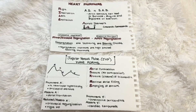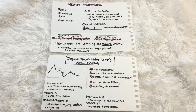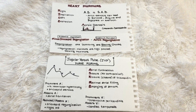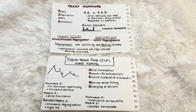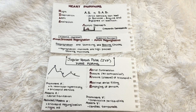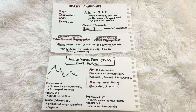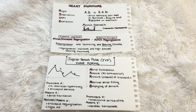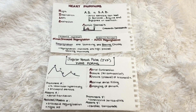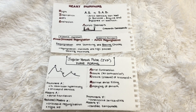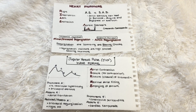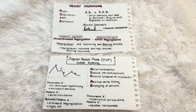Hi everyone, this is CurlyHeadMed. I'm back with another video. In today's video I will be sharing with you a mnemonic I found helpful when understanding the jugular venous pulse waveforms. I started this series on mnemonics involving the cardiovascular system about a year ago but only ended up uploading one video, so this is the second video in that series. Stay tuned if you feel like this might help you. All right, let's get started.